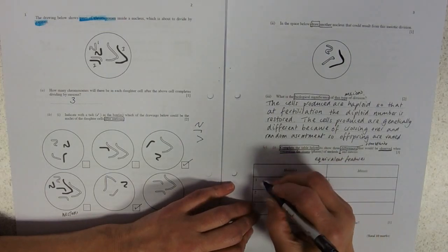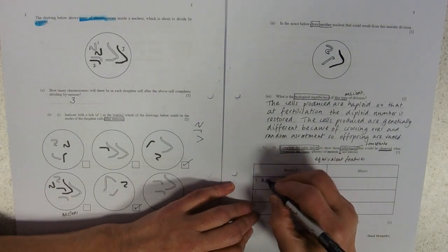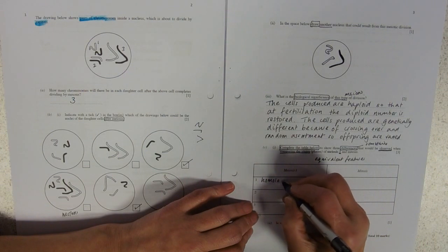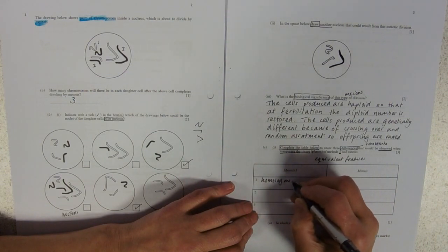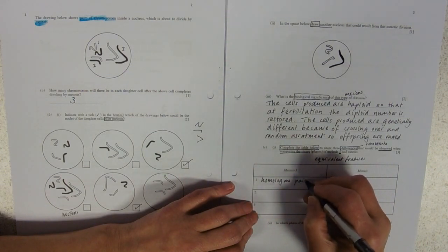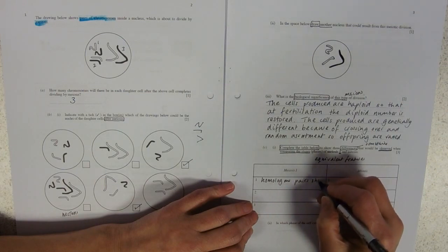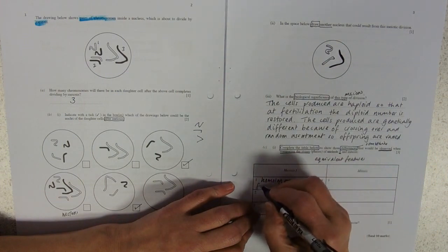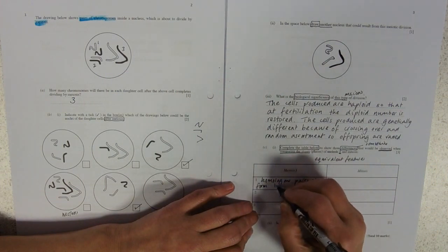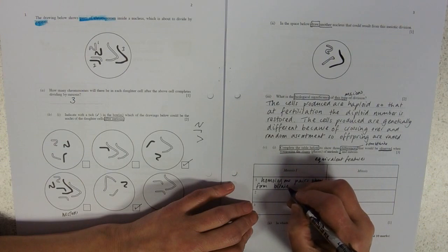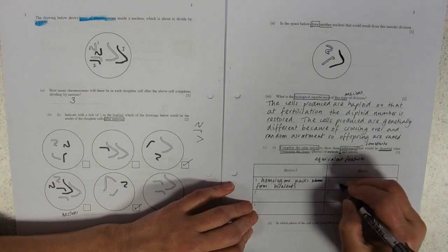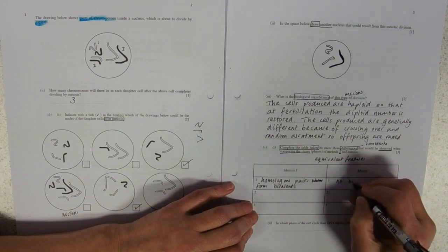So I think the biggest difference, the thing that makes the difference, so that's the first thing I'm going to talk about, is that homologous pairs - this is just going to make me feel really clever. Now I'm not going to say show form. Homologous pairs form bivalents.